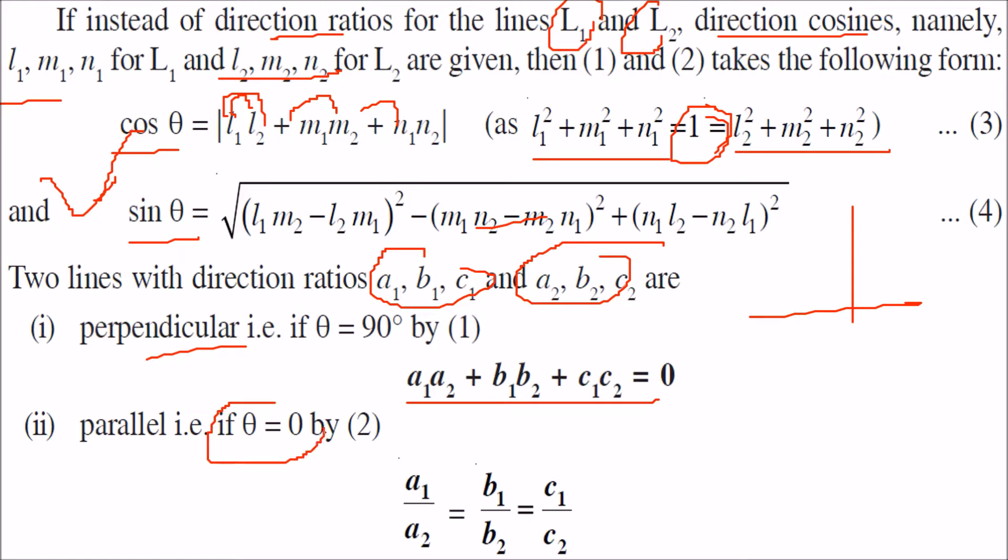In the case where theta equals 0, cos 0 equals 1, so the ratios a1 by a2, b1 by b2, c1 by c2 will be equal.